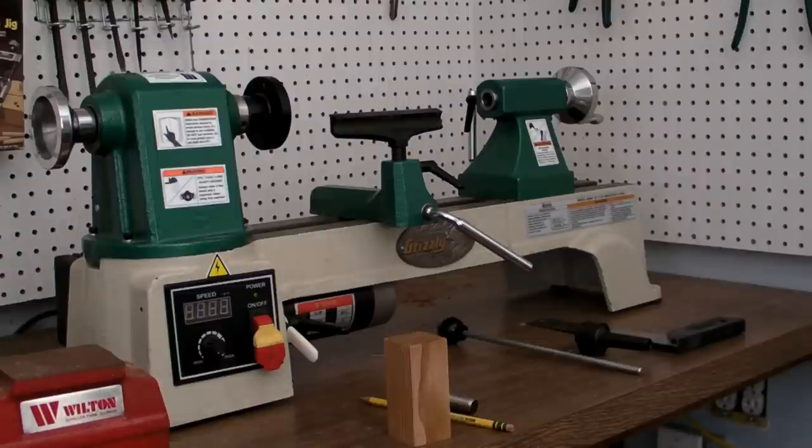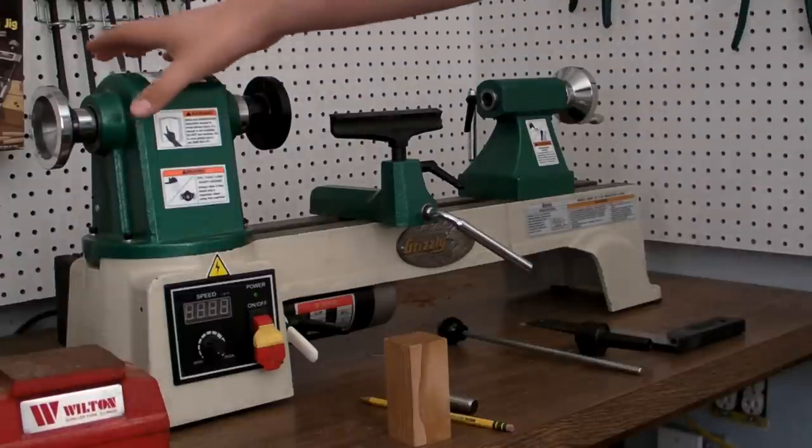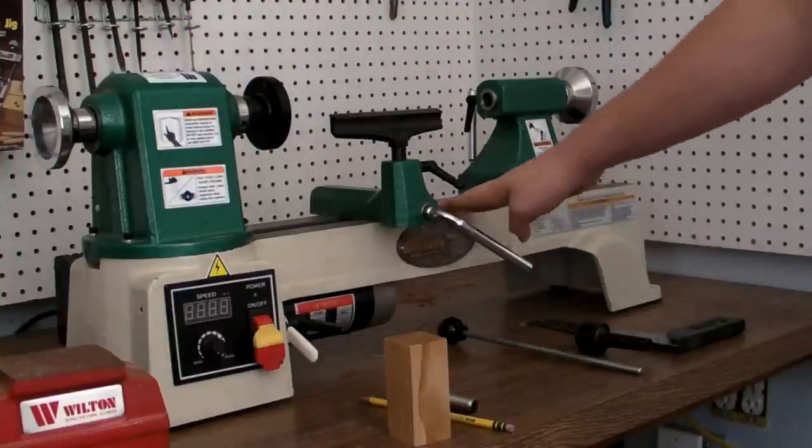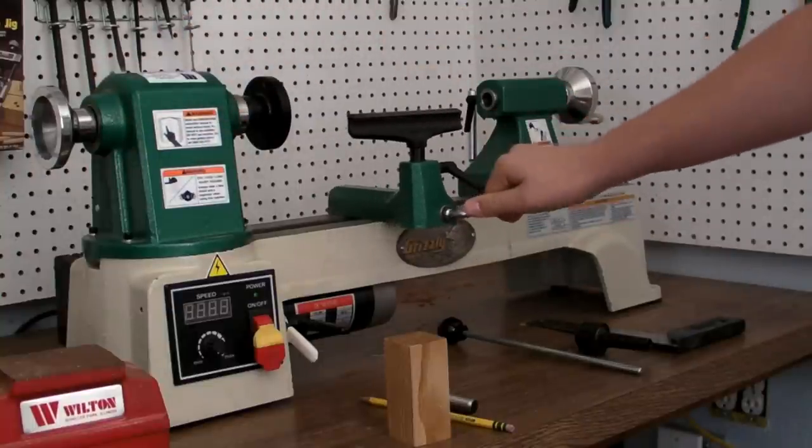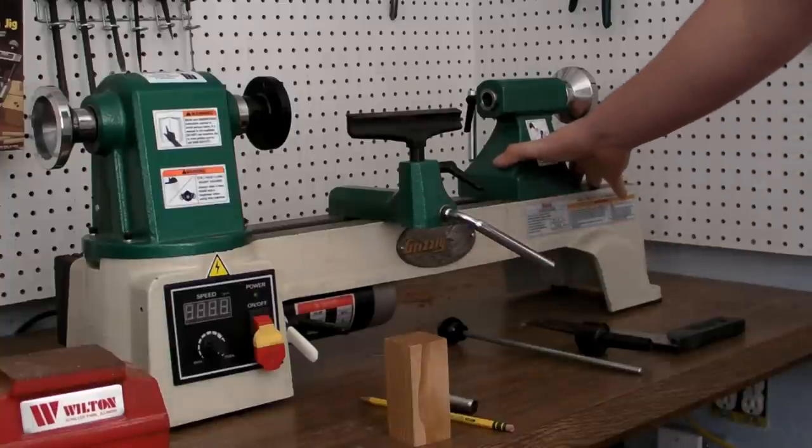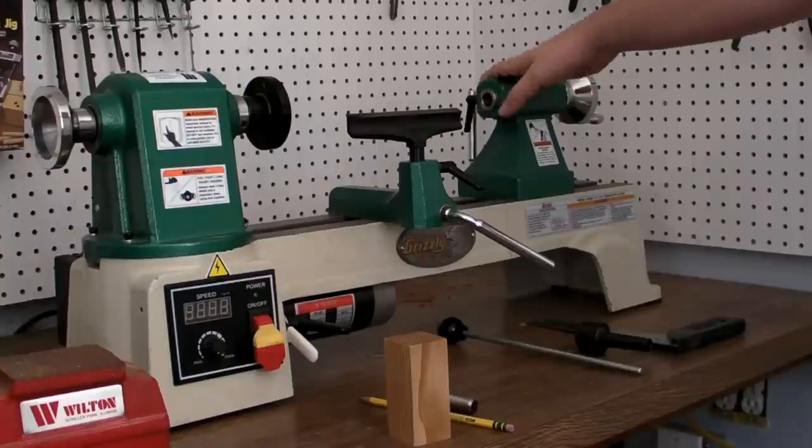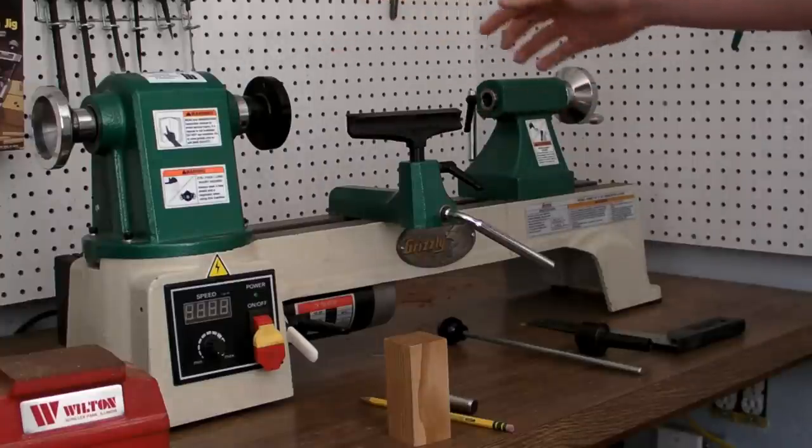There's three main parts to the lathe. There's the head stock, which powers your work piece. There's the bed, which the banjo here and the tail stock here rest on. And then there's the one I just mentioned, the tail stock. This allows you to press inwards and keep your work piece mounted and spinning concentric.